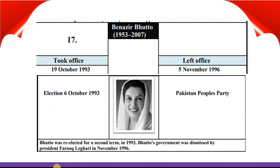Benazir Bhutto took office 19th October 1993 and left office 5th November 1996. Elections were held on 6th October 1993 and she belongs to Pakistan People's Party. Benazir Bhutto was re-elected for a second term in 1993. Her government was dismissed by President Farooq Leghari in November 1996.